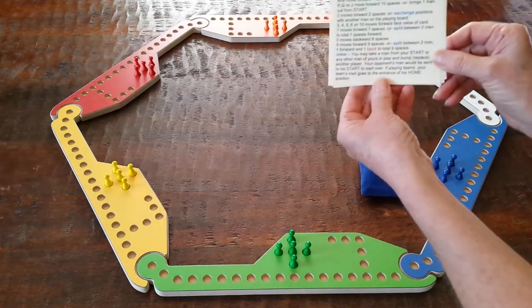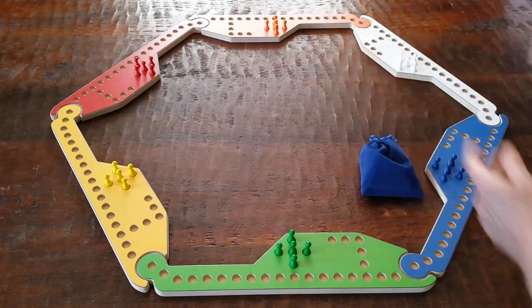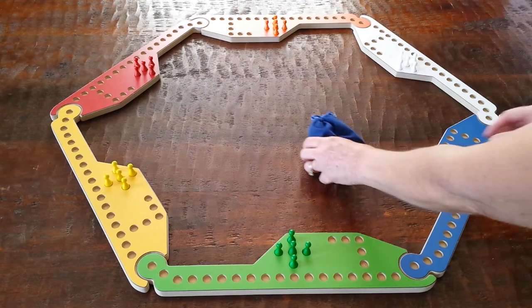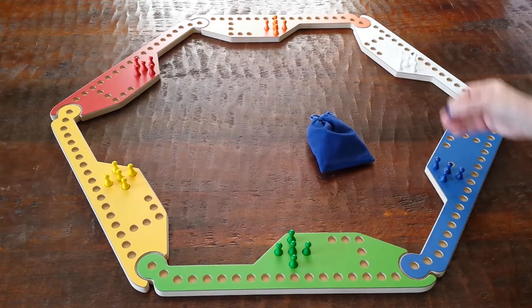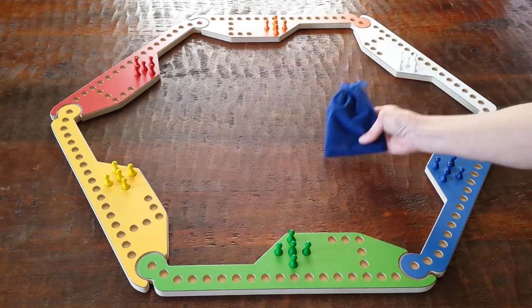It's got all the card values on here to help you move easily around the board. We also have coordinated pegs that match all of the paddles. They are contained in the storage pouch.